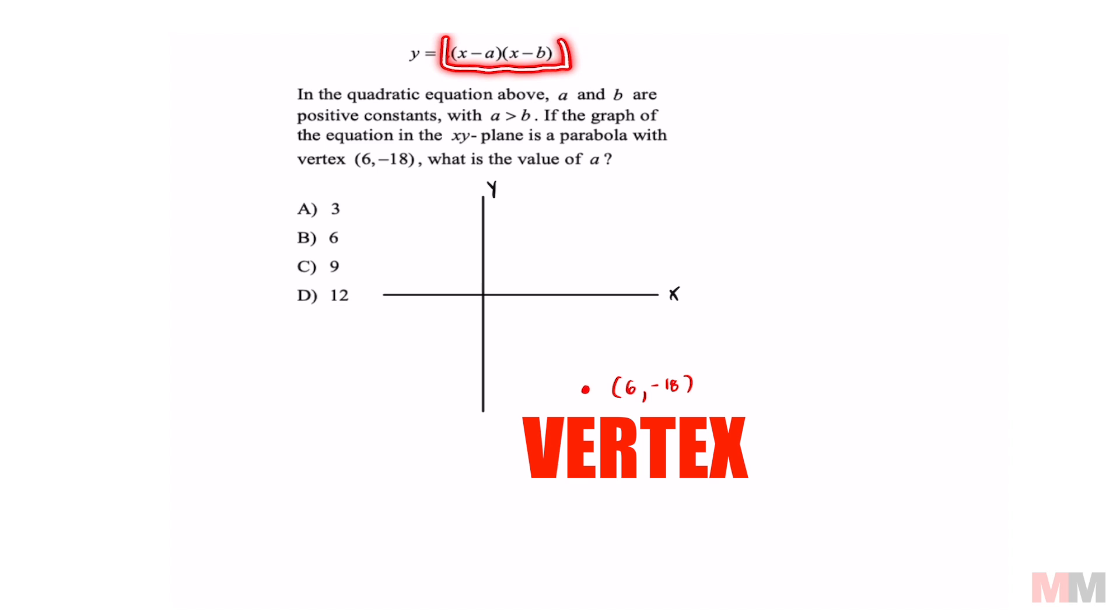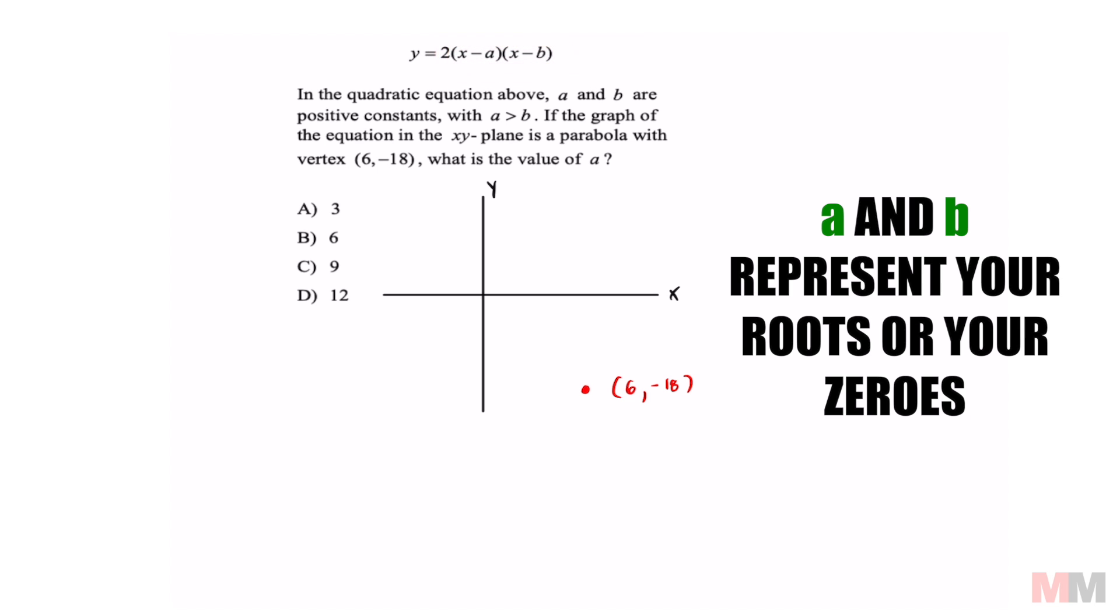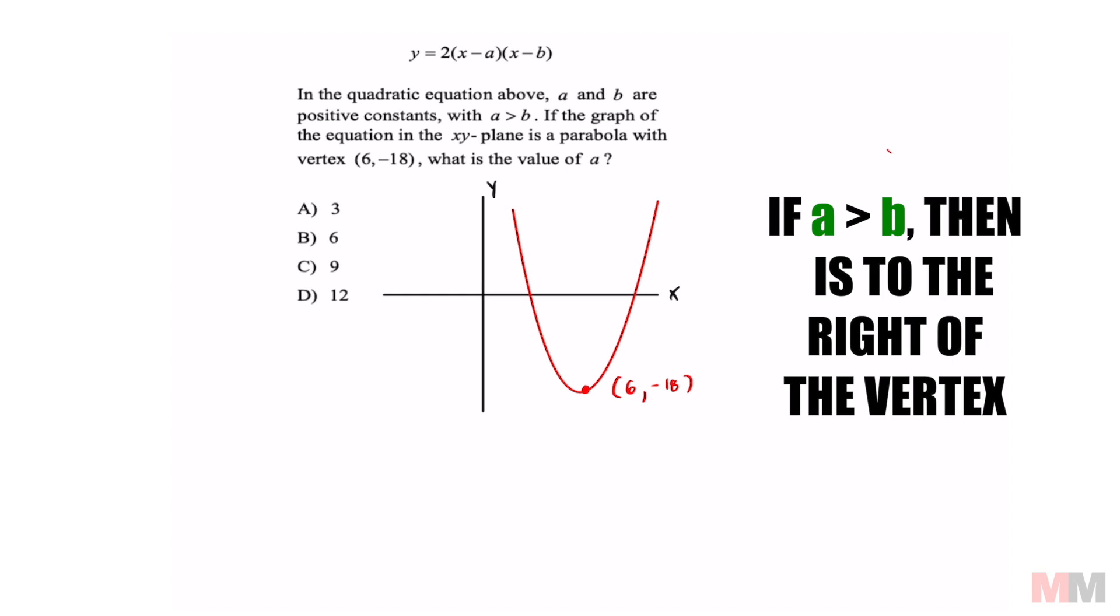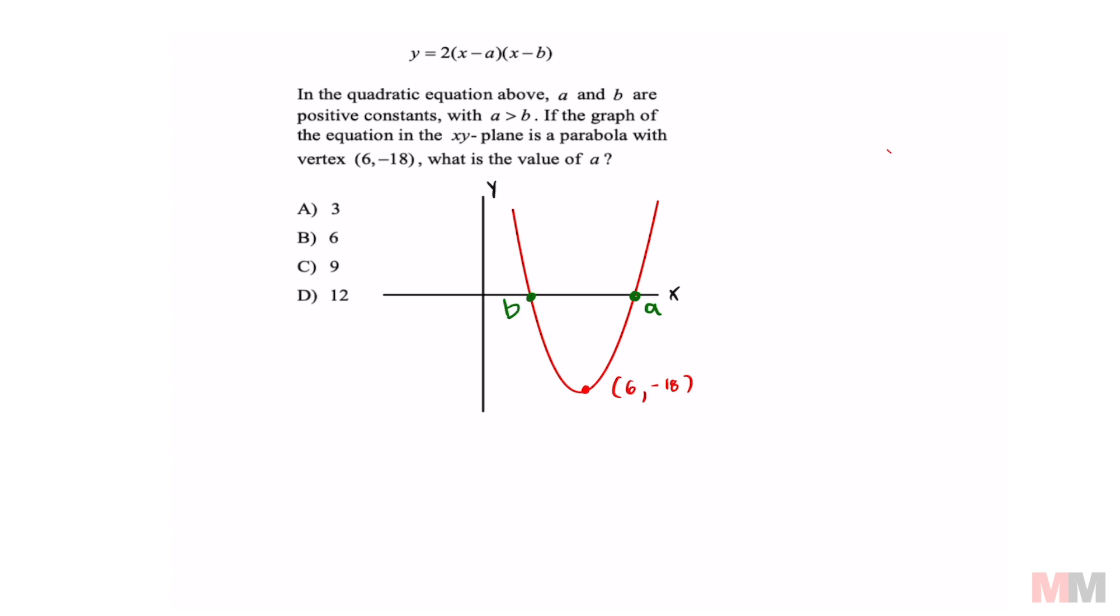When the quadratic equation is in factored form like this, then a and b are going to represent your roots. So the graph has to look something like this. This states that a is more than b, meaning that a has to be to the right of that vertex and b has to be to the left of it.